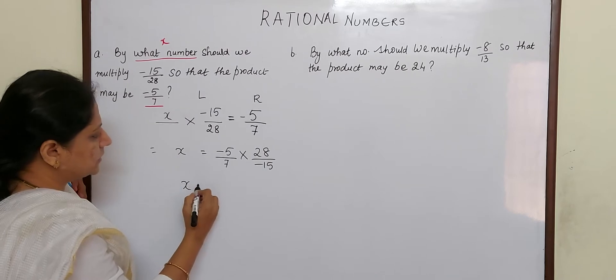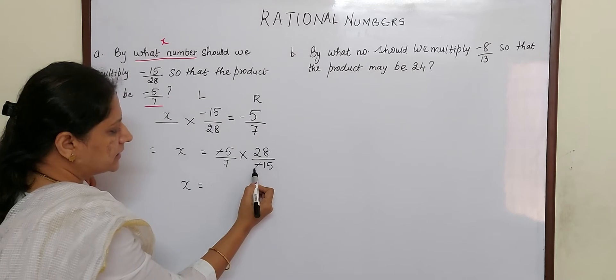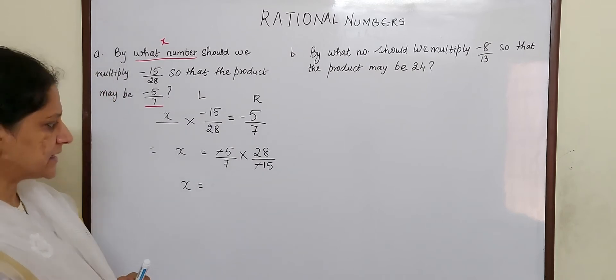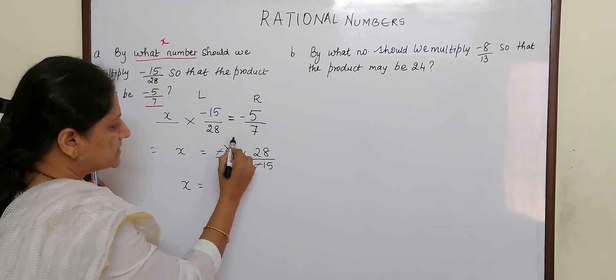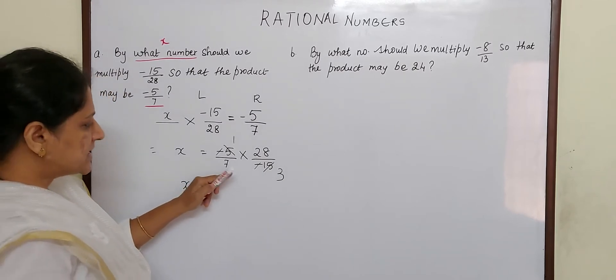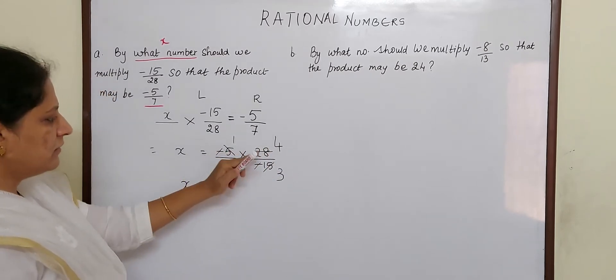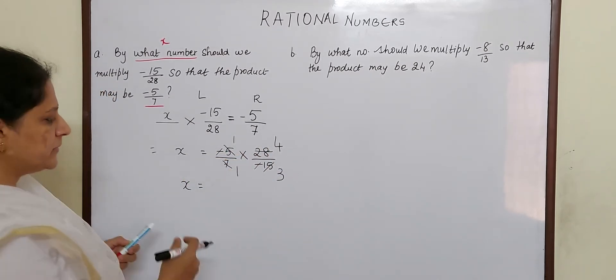So x is equal to - now here there are two negative signs, one in the numerator and one in the denominator that gets cancelled. Then 5 into 1 is 5, 5 into 3 is 15, then 7 into 1 is 7, 7 into 4 is 28. So now there is no more cancellation to be done.